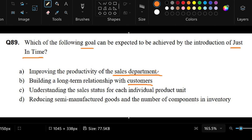What about letter C? Understanding the sales status for each individual product unit. We again have the word 'sales.' We don't have 'customer,' but it looks like we're focused on sales for this choice too.